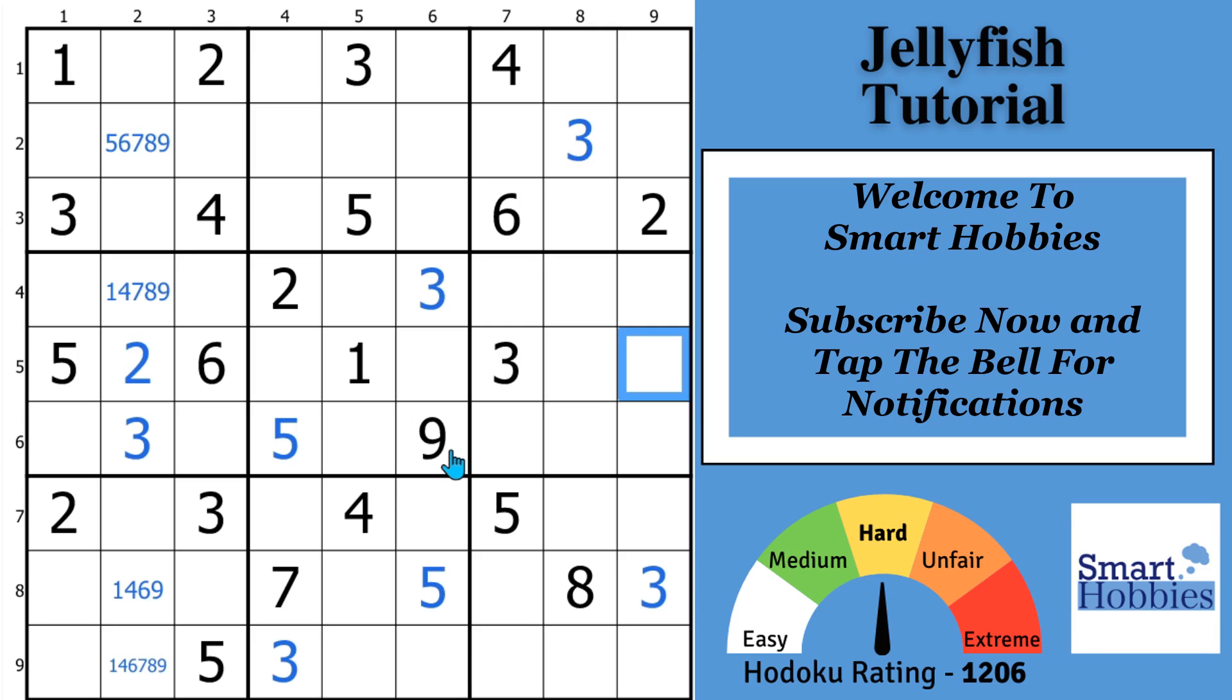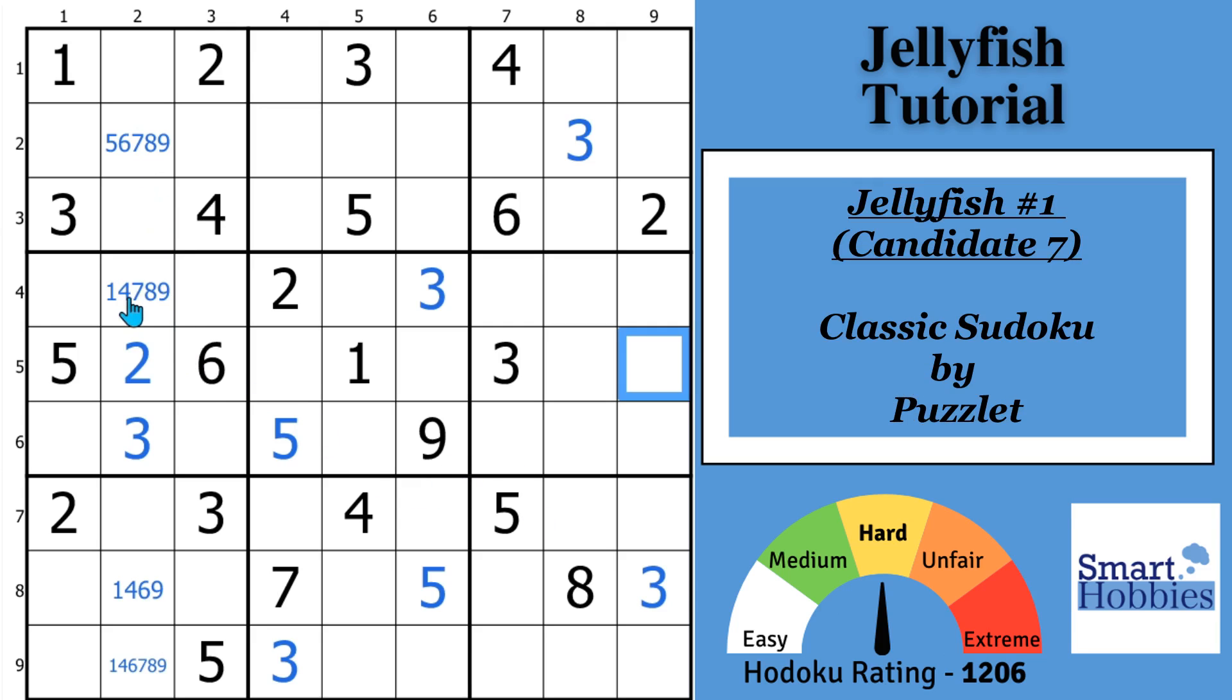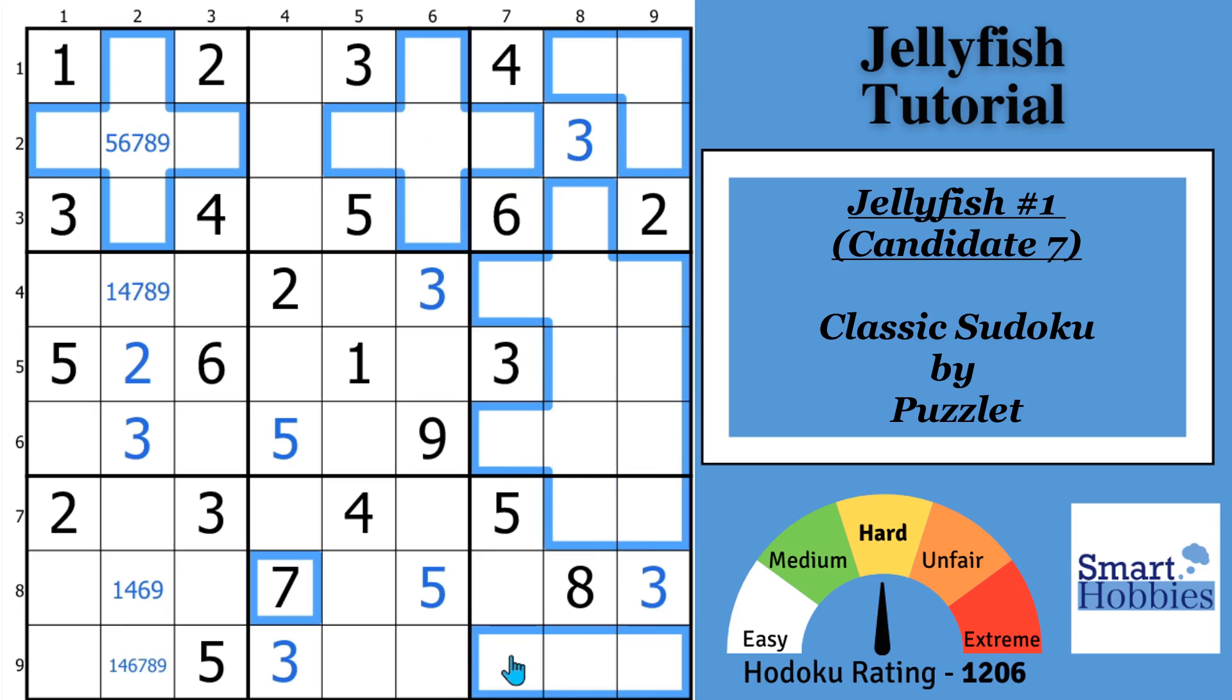And now I want to show you the first jellyfish. You may notice I already filled out some of these cells in column 2. These are going to be our focus cells for this particular tutorial. A jellyfish is a single candidate strategy. So what we want to do is look at all the single candidates in this puzzle. And so now I'm going to fill out everywhere else a 7 could go and highlight it. I'll highlight all the possible 7s at this point in the puzzle in blue.